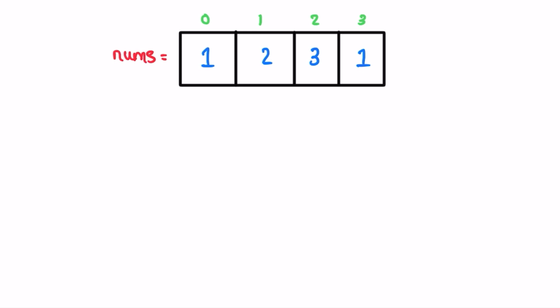Similar to that question, we solve this using binary search. We declare two pointers: the left pointer starts at the beginning and the right pointer starts at the end. The left pointer moves left to right, and the right pointer moves right to left. The while loop runs as long as left is less than right.